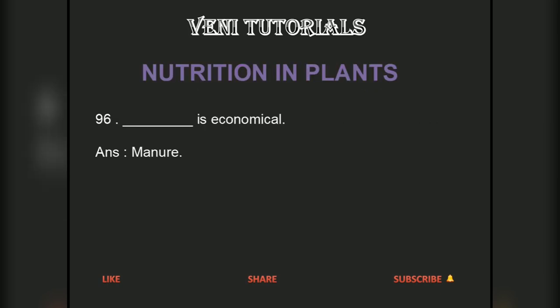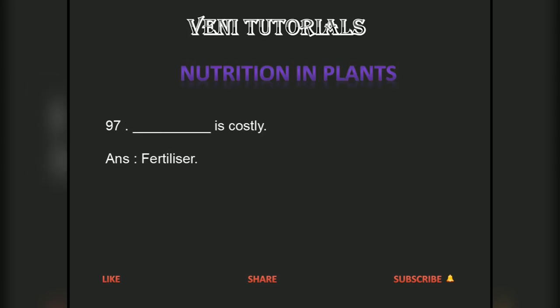Dash is economical. Answer: Manure. Dash is costly. Answer: Fertilizer.